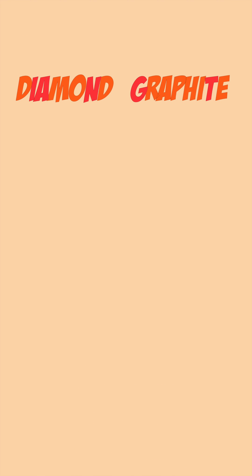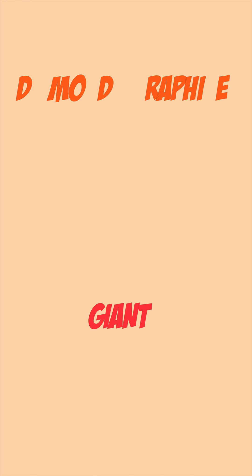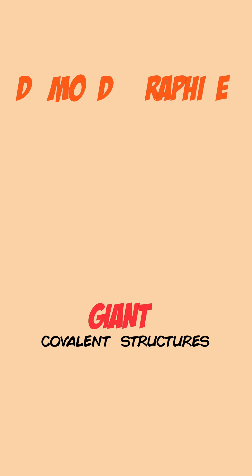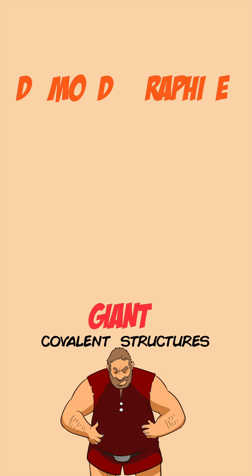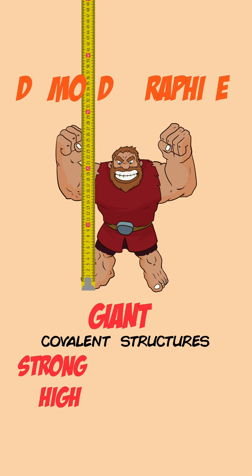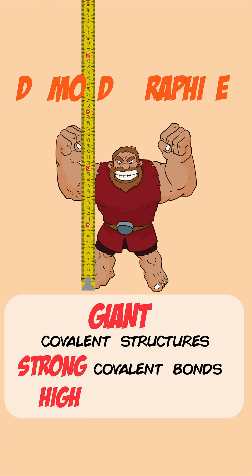You need letters from both diamond and graphite to write the word giant. This reminds you that both of these are giant covalent structures. Giants are very strong and have a high height, which tells you that they both have many strong covalent bonds that need a lot of energy to break, which means they have high melting points.